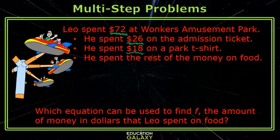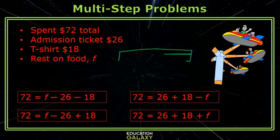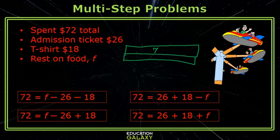on a park t-shirt, and he spent the rest of the money on food. We need to pick out which equation can be used to find F, the amount of money in dollars that Leo spent on food. Let's draw a strip diagram to help understand the problem. Leo spent $72 total; out of this he spent $26 on the